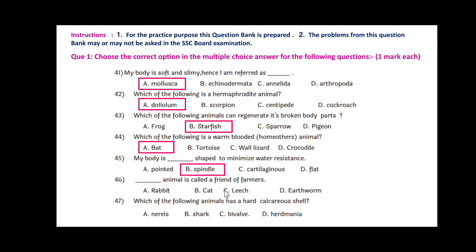Question 45: Dash animal is called a friend of farmers. Out of these four, earthworm is a friend for the farmers. It helps in farming and increases the fertility of the soil. Question 46: Which of the following animal has a hard calcareous shell? Out of these, bivalve animals are having the hard calcareous shell.